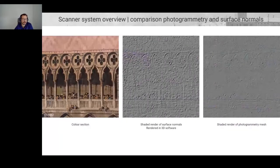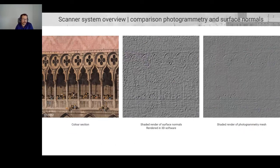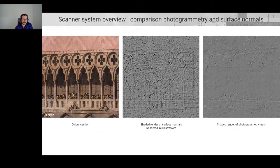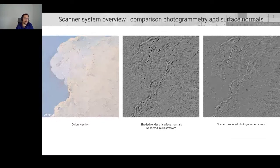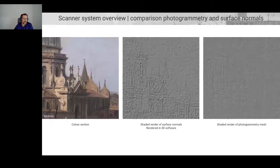Just a comparison to show the different techniques: the colour section is about nine centimetres square. The middle image is the RTI or photometric stereo data, and compared to the right image — photogrammetry — you can see there is still much more information recovered with photometric stereo, even though photogrammetry is surprisingly good. For example, canvas texture visible in the photometric stereo doesn't show as clearly in the photogrammetry.